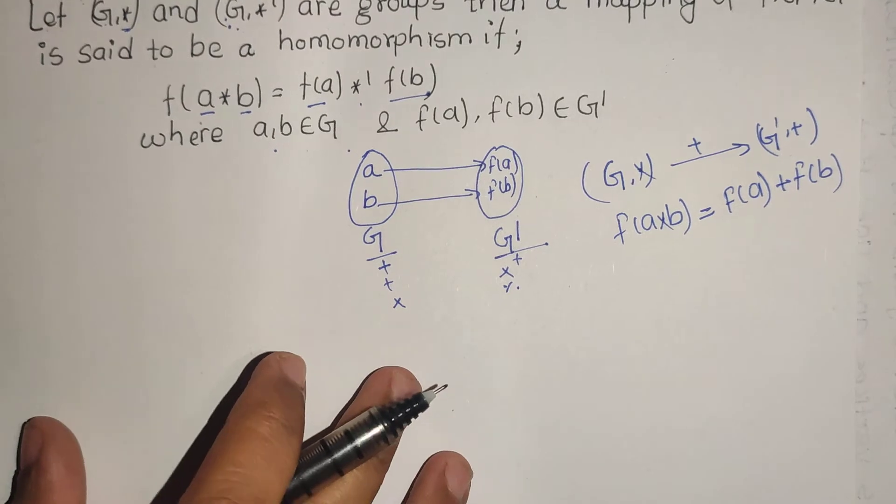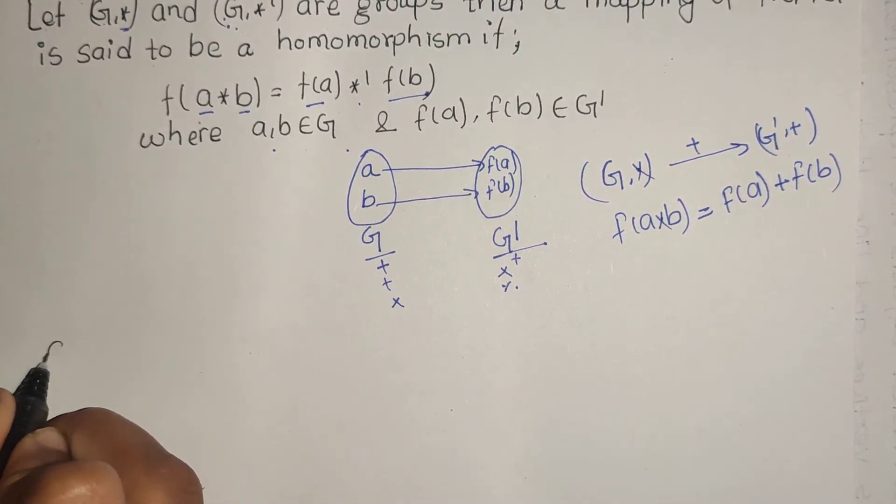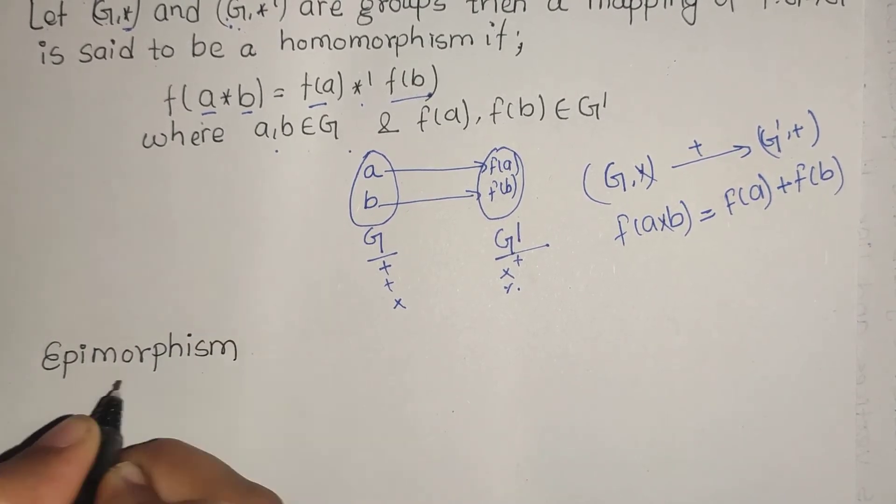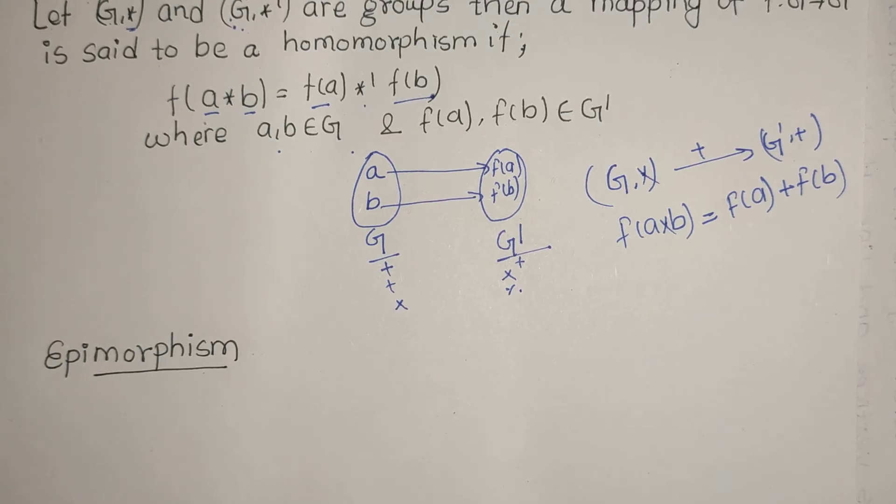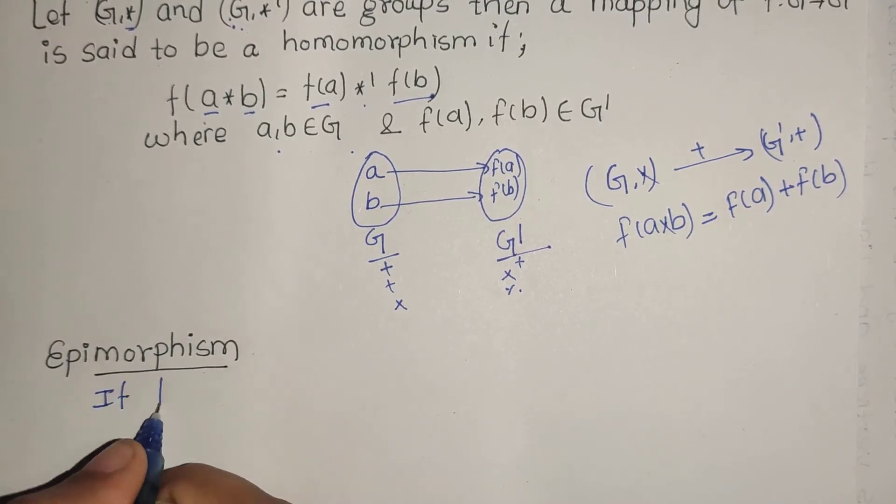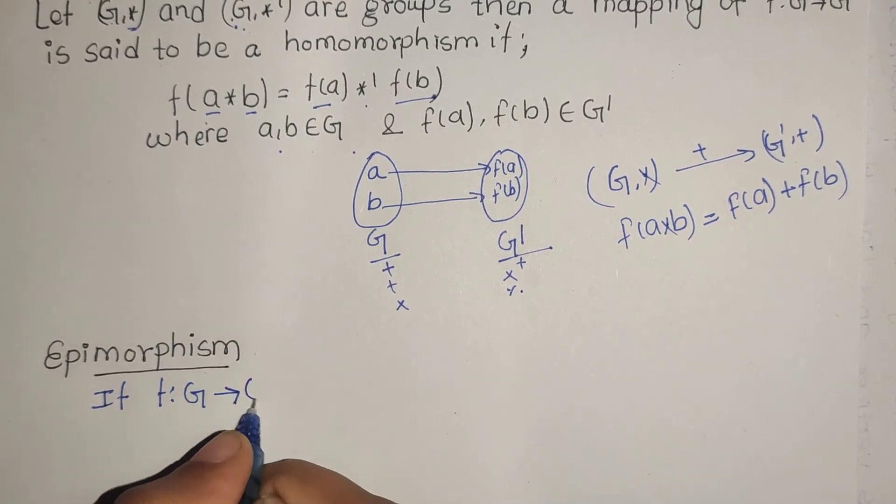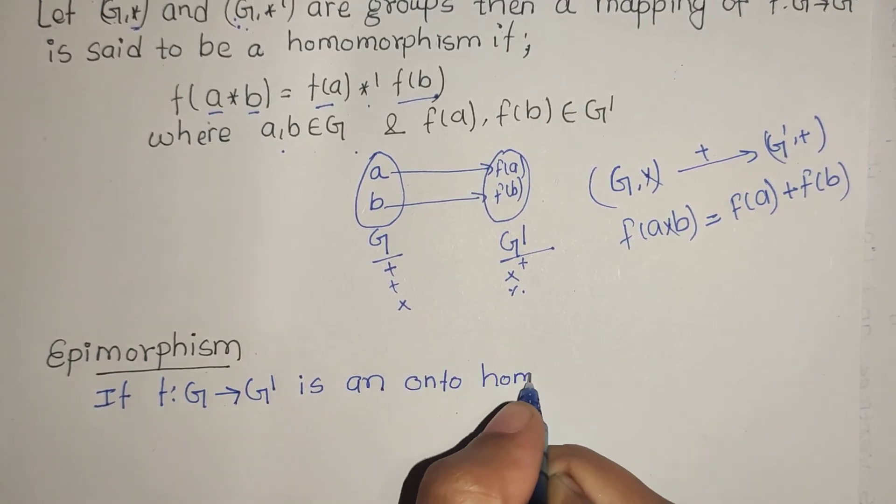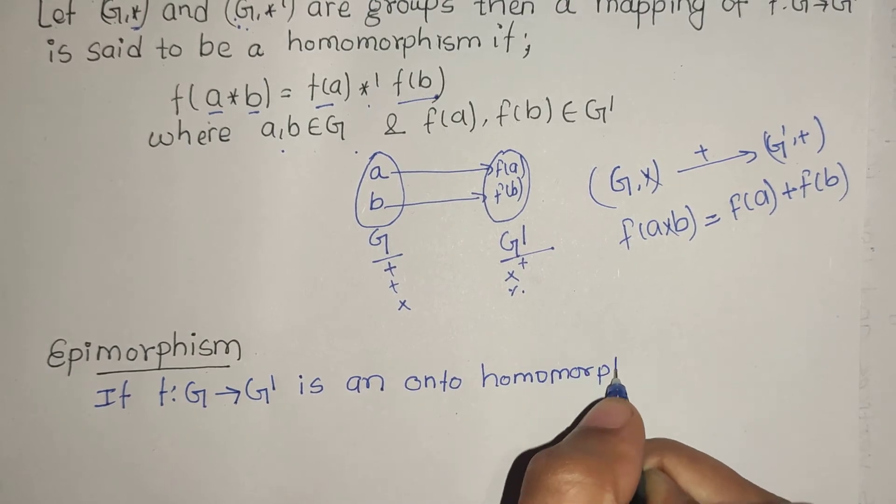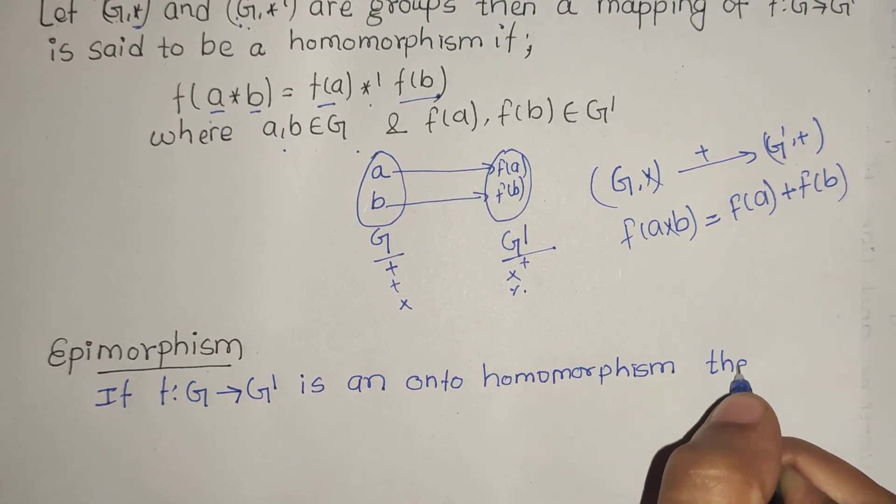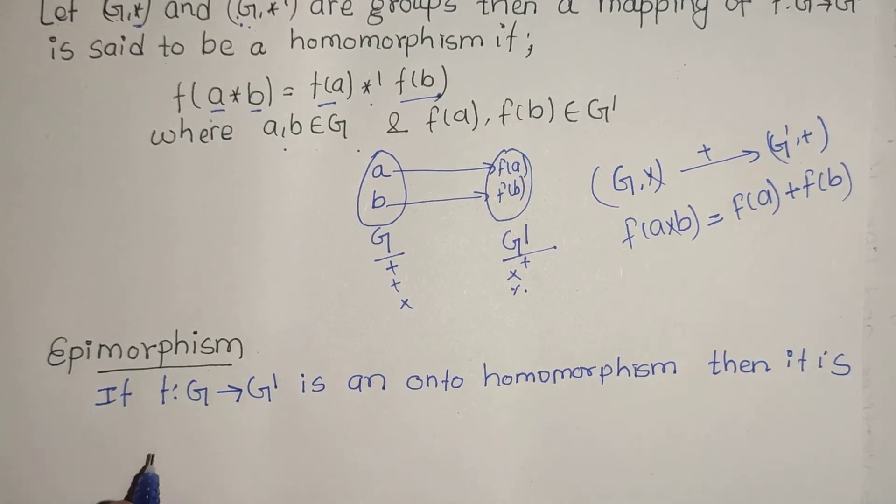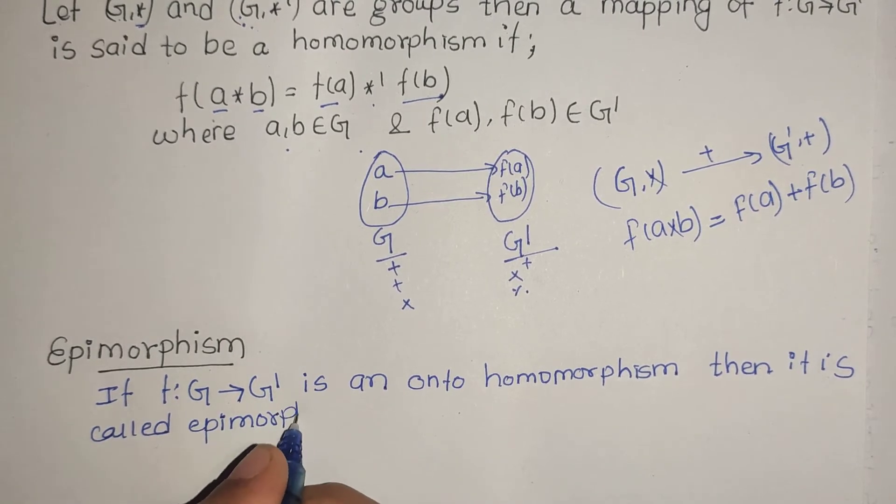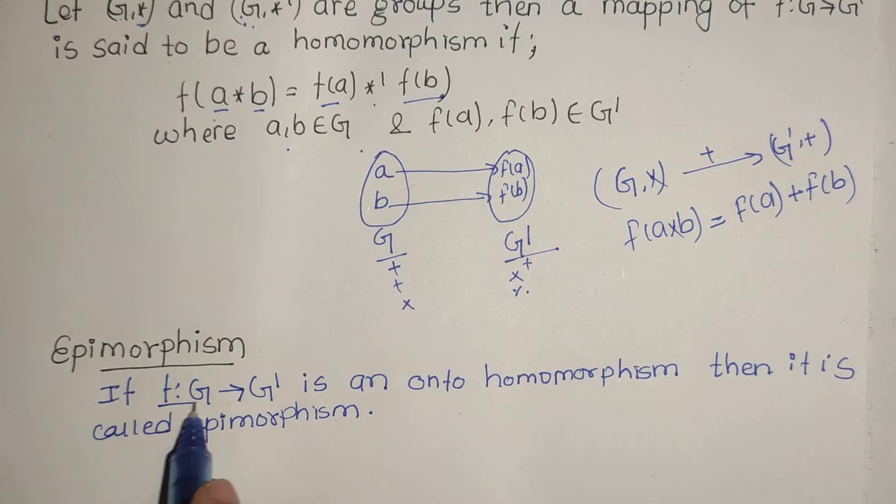Now, epimorphism. If f: G → G' is an onto homomorphism, meaning the homomorphism is onto, then it is called epimorphism.